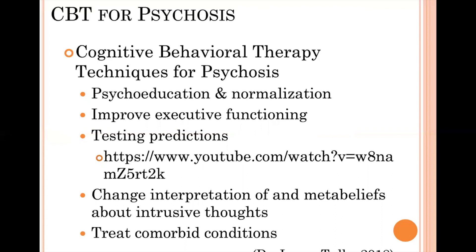CBT for psychosis can also help improve executive functioning — the ability to plan, manage a schedule, and take care of daily tasks. It can identify and address beliefs that may be increasing symptoms, such as avoidance driven by anxiety about the intrusive thoughts. Getting them to stop avoiding — similar to CBT for social anxiety — will reduce anxiety and reduce the strength of the voices. You can also help them test out the beliefs coming from the psychosis, as the following video demonstration will show.